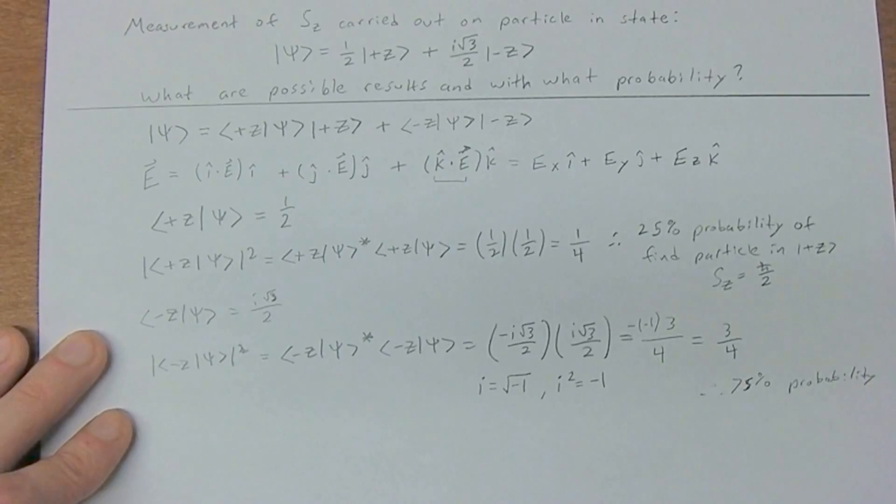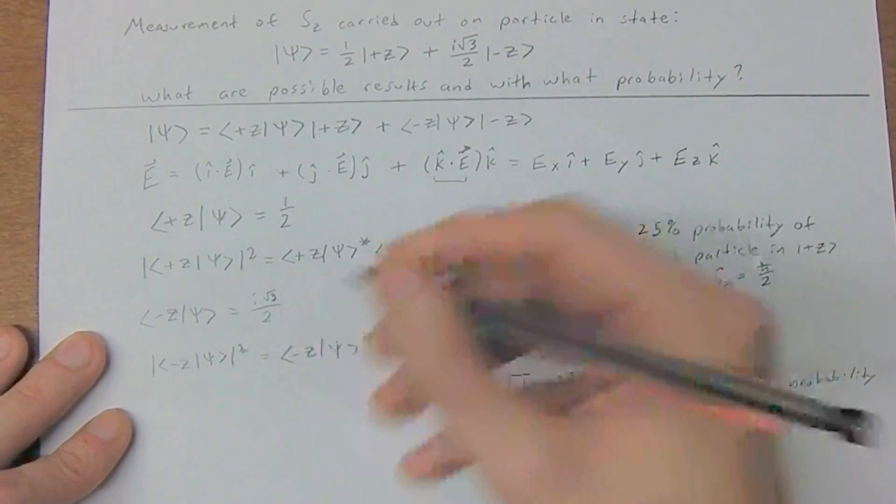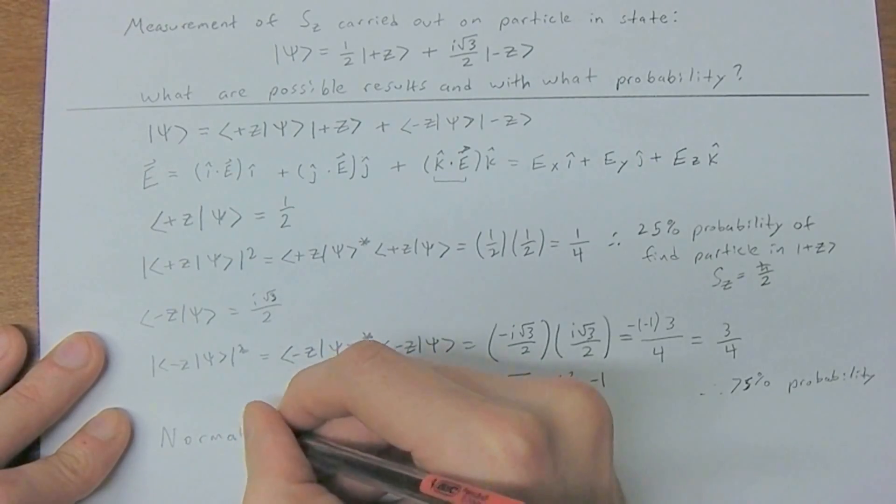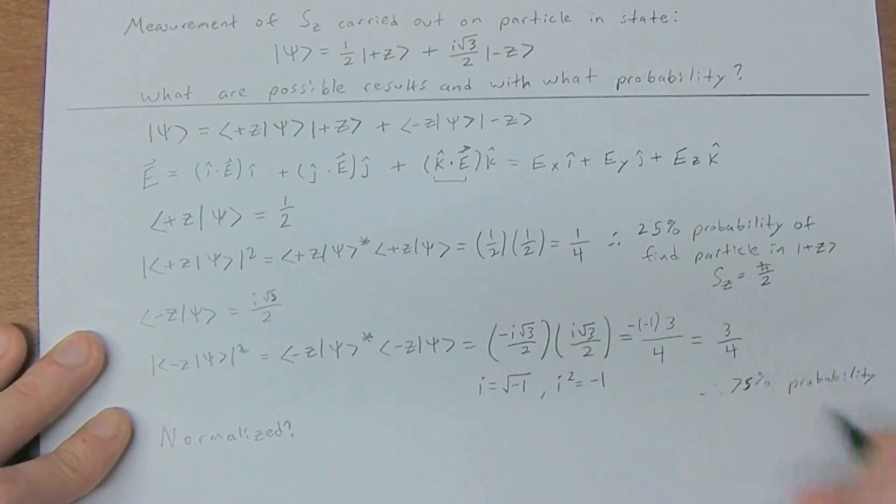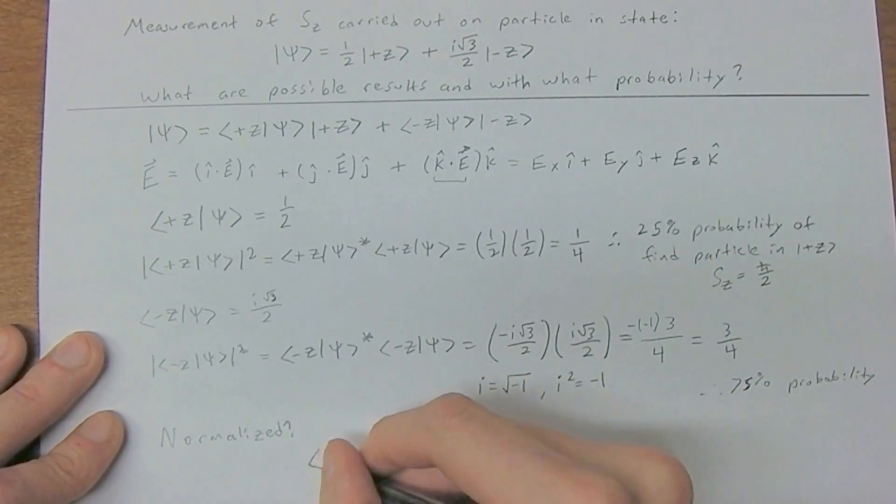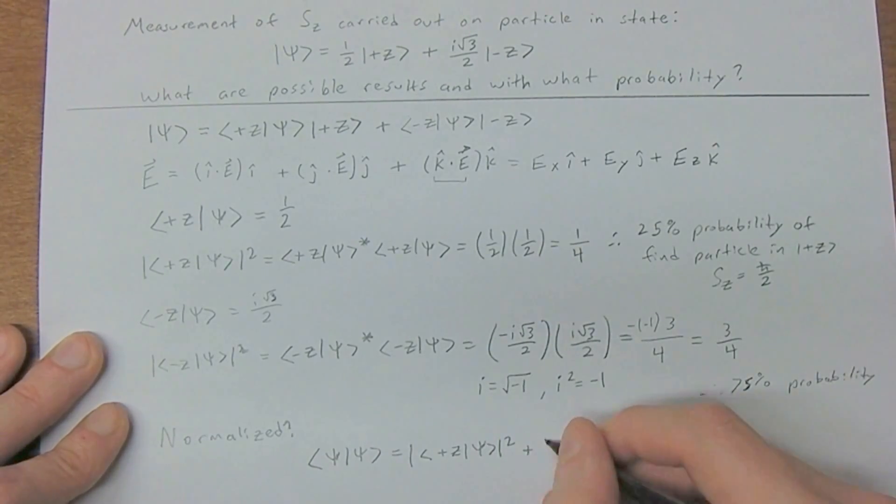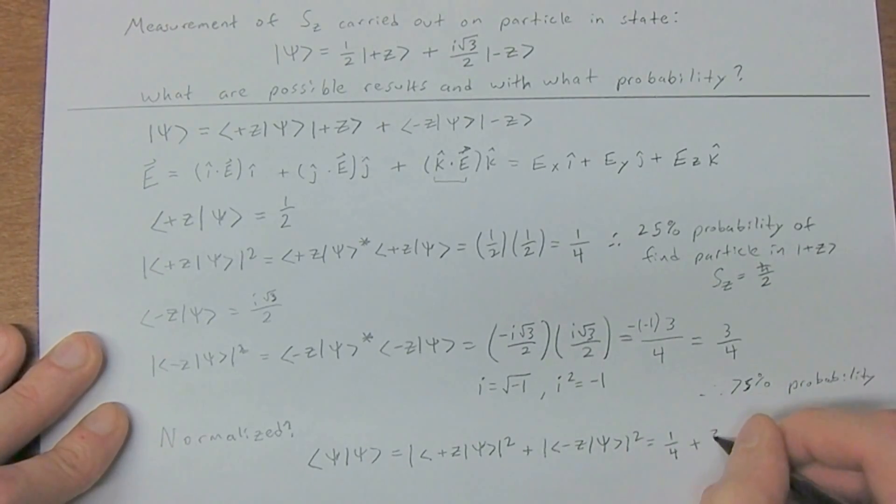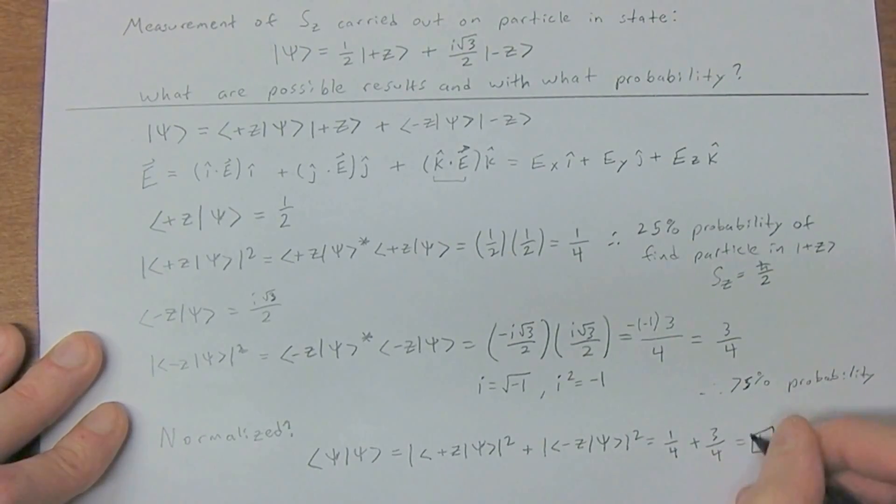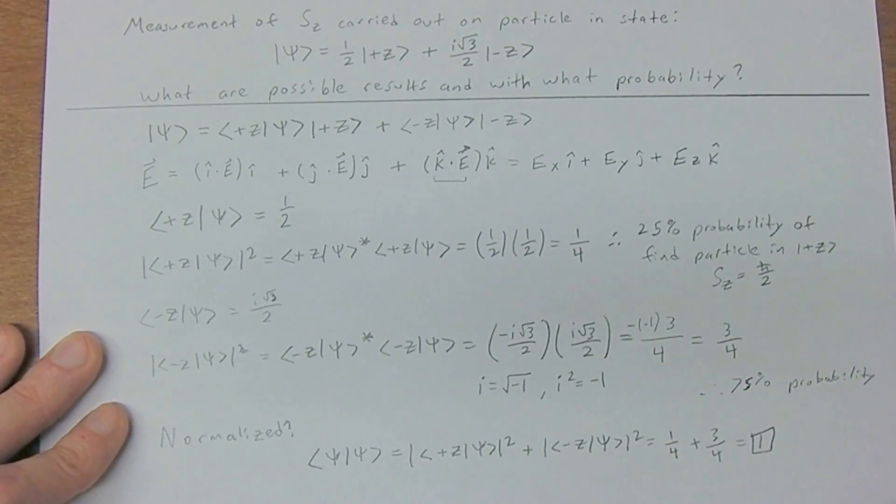We can also ask, is our system normalized? Indeed, this question was cleverly designed such that it is normalized. You can check that by doing psi acting on psi. We do plus zed psi, the probability of that, plus minus zed psi. We have a quarter plus three quarters, which equals one. So if you add up your probabilities and they're all equal to one, then you know that your system is normalized.